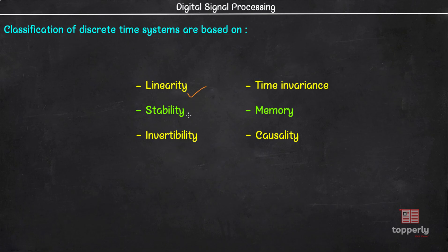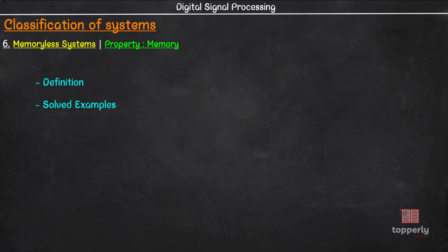about linearity, stability, invertibility, time invariance, and causality. In this video we will see the last property which is memory. We will see the definition first and then see some examples of systems with memory and without memory. So let's get started.